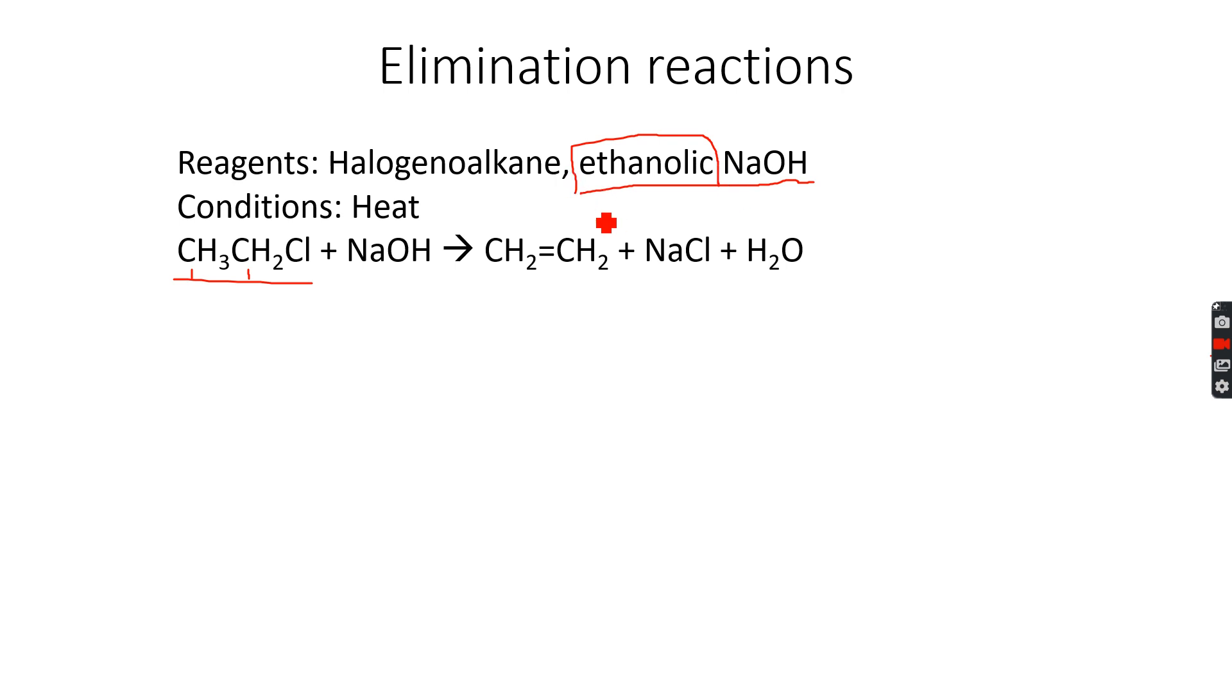Let me tell you what ethanolic means. Ethanolic means that NaOH is dissolved in ethanol. So this time NaOH is not in an aqueous solution. Aqueous solutions are the ones in which the substance is dissolved in water, and ethanolic solutions are the ones in which the substance is dissolved in ethanol. So in this case NaOH is not dissolved in water, it is dissolved in ethanol, and that's why it's called ethanolic NaOH.